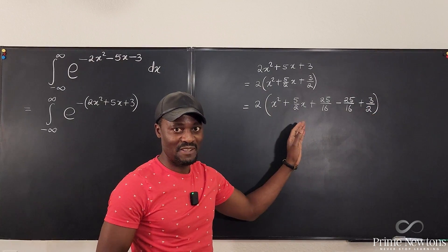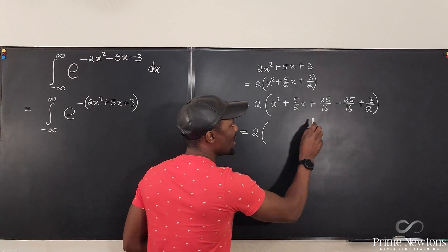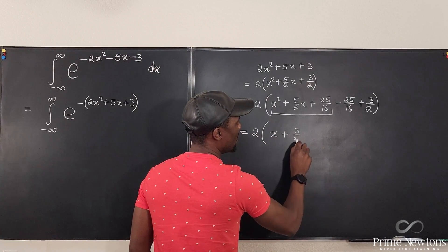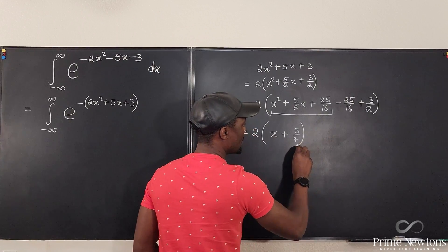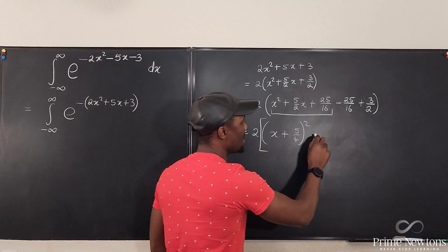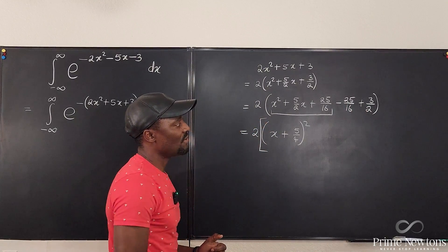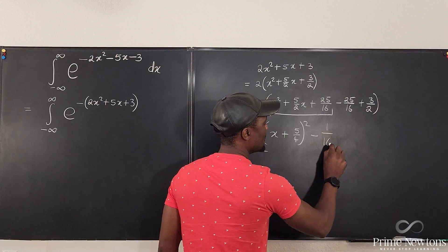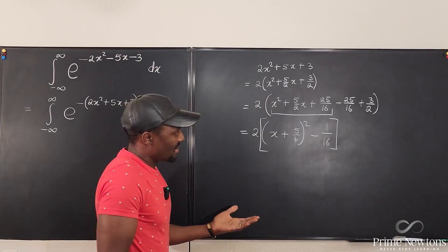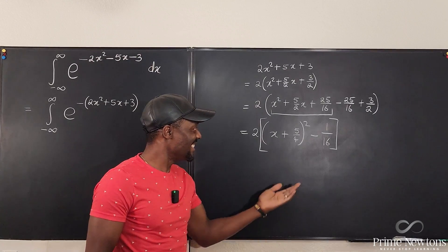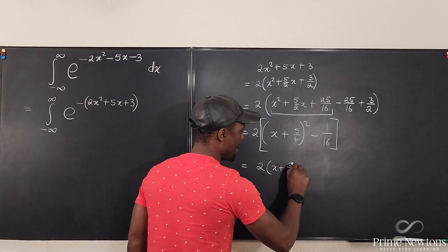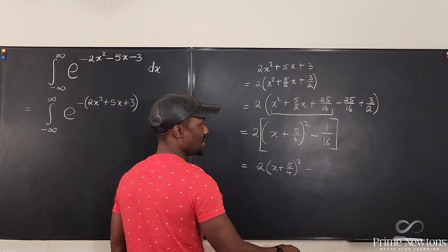The expression x² + 5/2 x + 25/16 is the perfect square (x + 5/4)². We subtract 25/16 and add 3/2, giving minus 25/16 + 3/2 = minus 1/16. So the full quadratic becomes 2 times [(x + 5/4)² − 1/16], which distributes to 2(x + 5/4)² − 1/8.